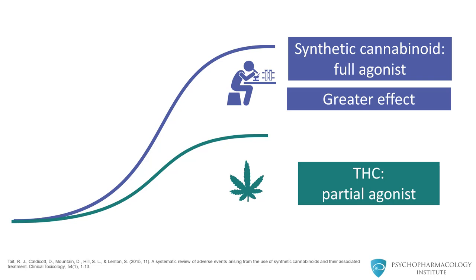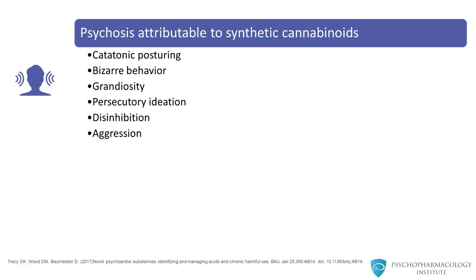These molecules are even stronger than Sinsemilla. In London, we are now beginning to see more and more cases of psychosis attributable to synthetic cannabinoids. Catatonic posturing, bizarre behaviour, grandiosity, persecutory ideation, disinhibition, and aggression are common elements of synthetic cannabinoid toxicity.